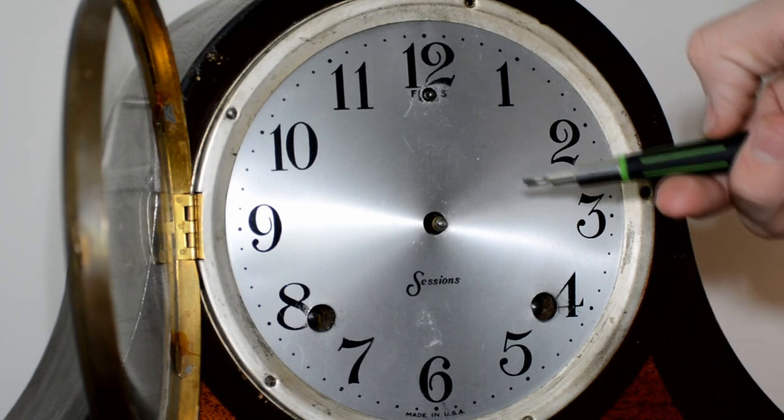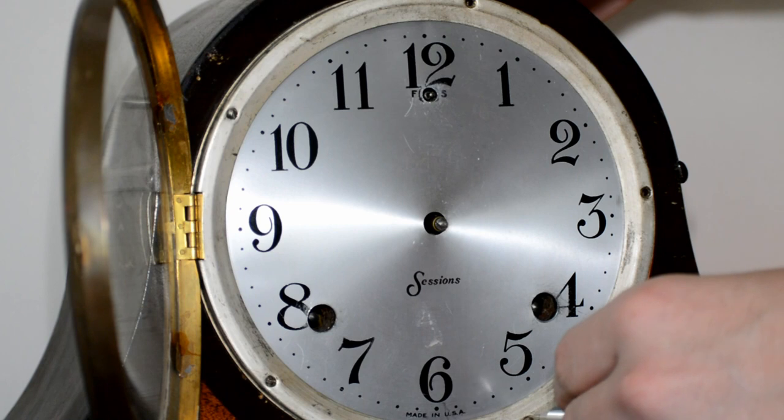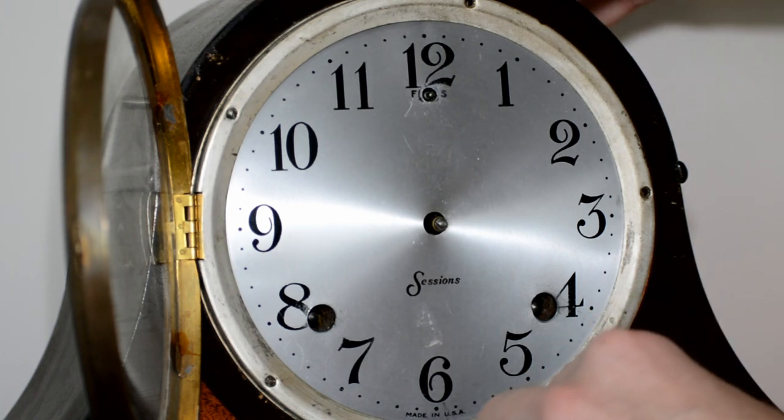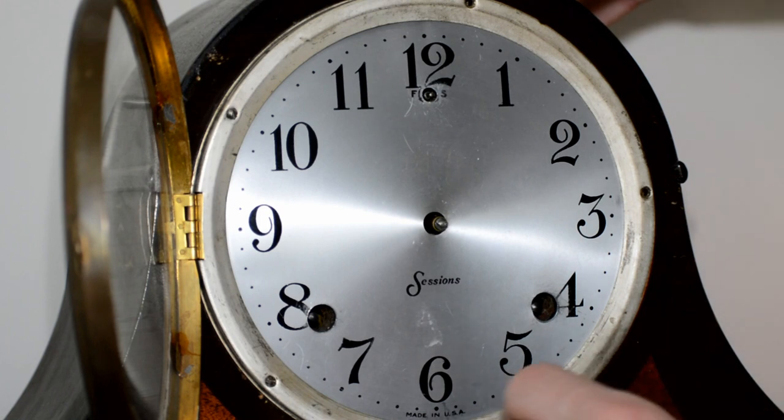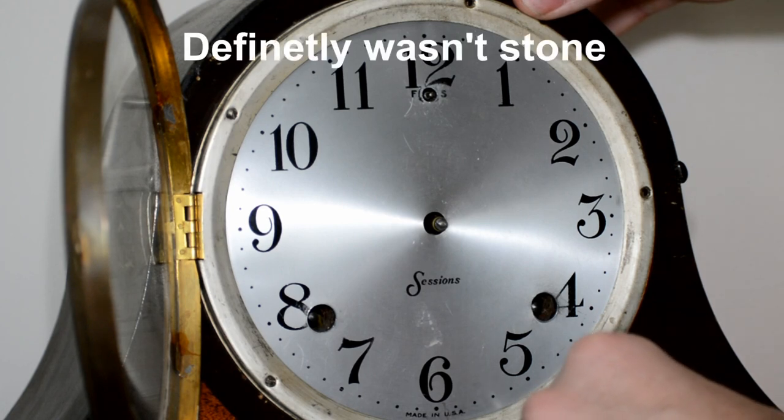Some clocks have paper faces, some have wooden ones. This one here is metal. The one I just showed you is sort of stone, I'm not really sure what that is.